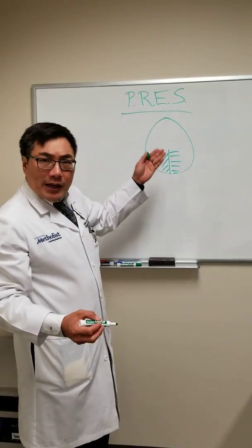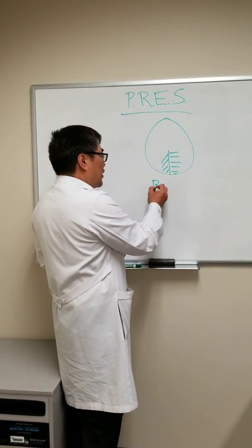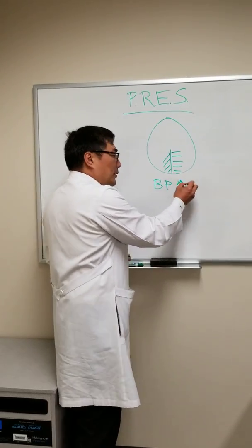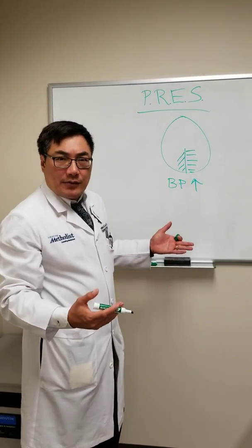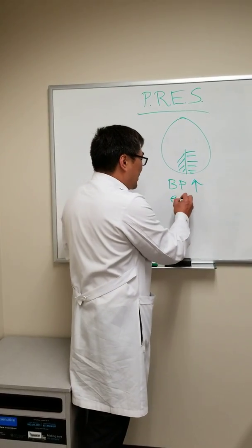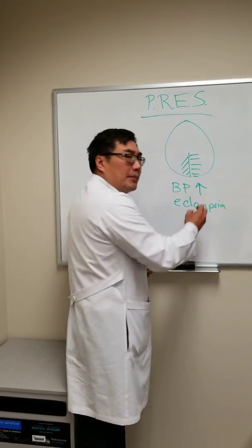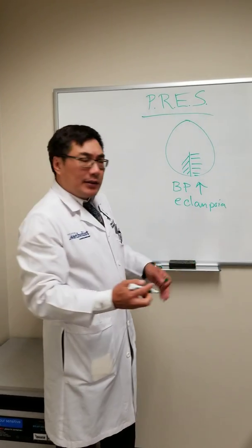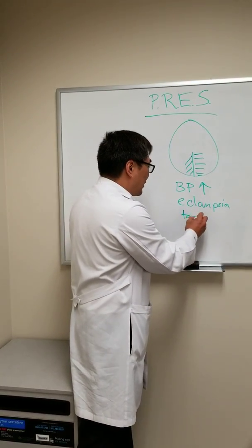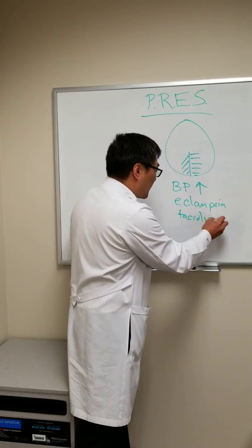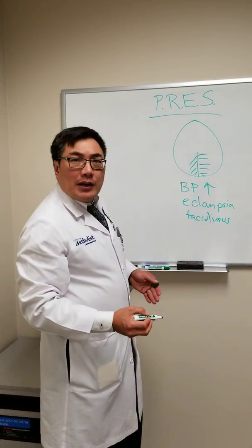There are many causes of PRES. The most common ones are elevation of blood pressure — malignant hypertension, hypertensive urgencies and hypertensive emergencies — and in pregnancy, eclampsia. But also medications can cause it, including immunosuppressive therapies like tacrolimus. There are other causes too, but these are the most common.